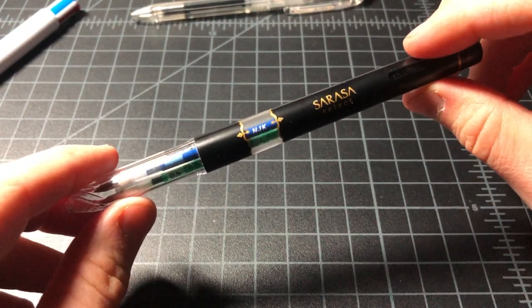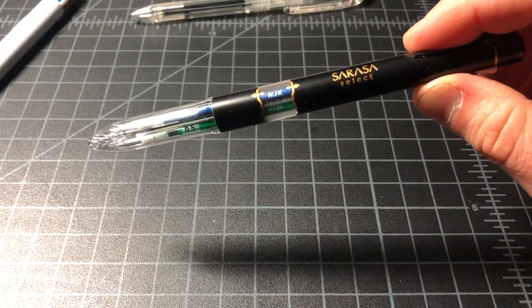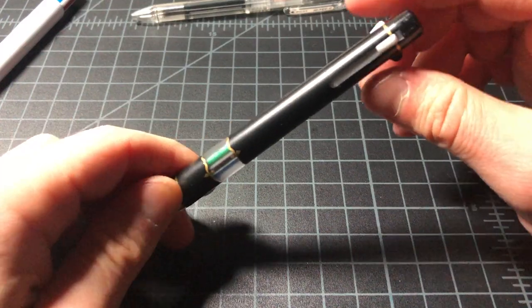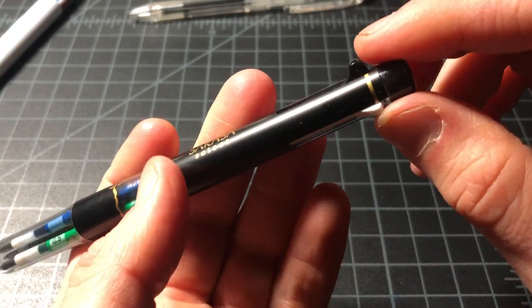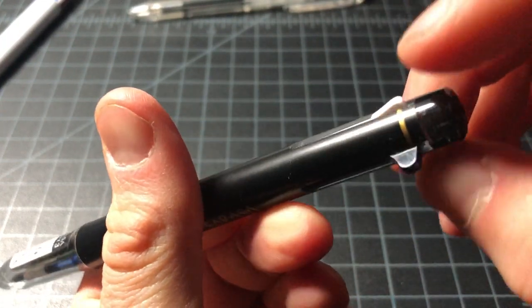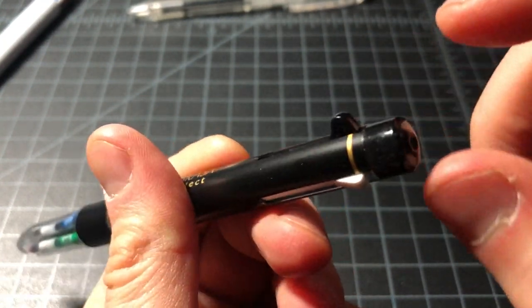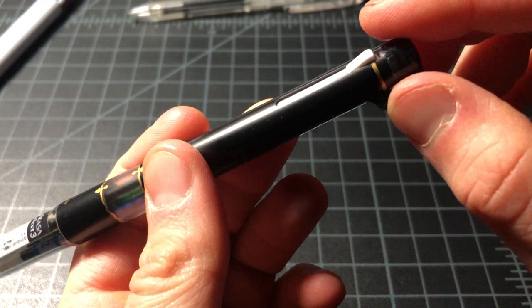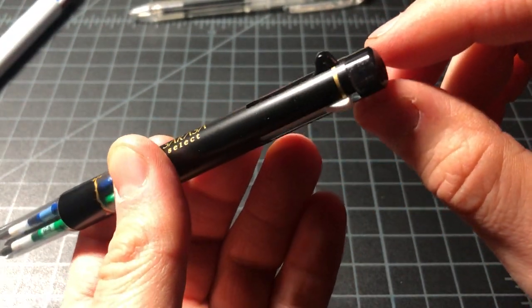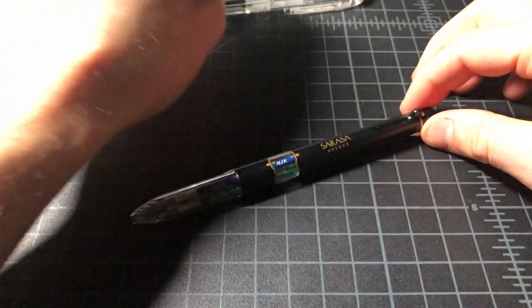This is called the Zebra Sarasa Select. I'm a big fan of the Sarasa ink, so if you're looking for a quick drying ink that writes really well, you have Sarasa. And the Select is the newer body design. This is a three color, so basically you have these three here, but then this one is larger for whatever reason. I think just because it looks cool.